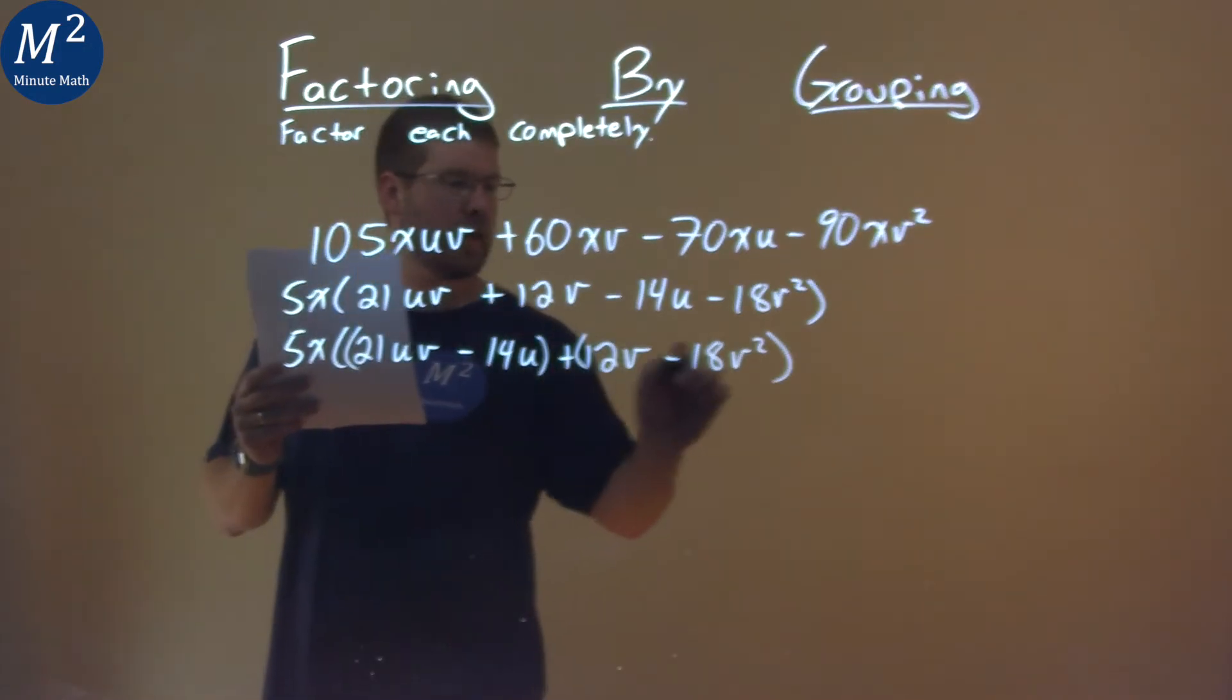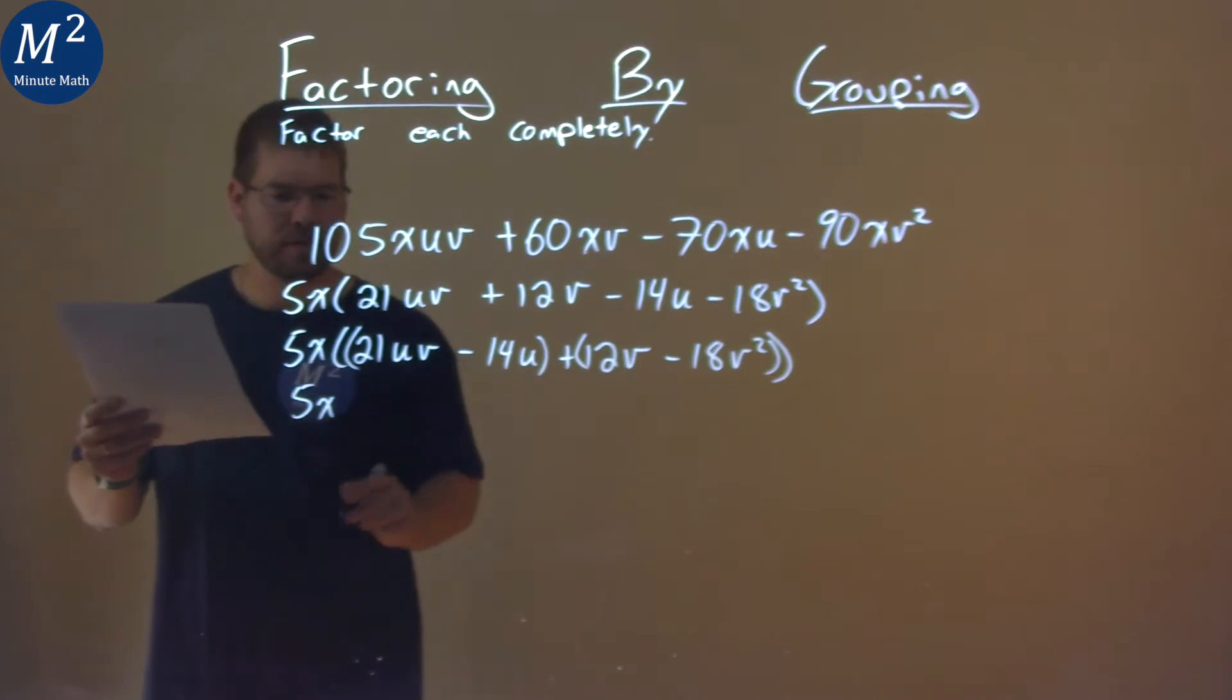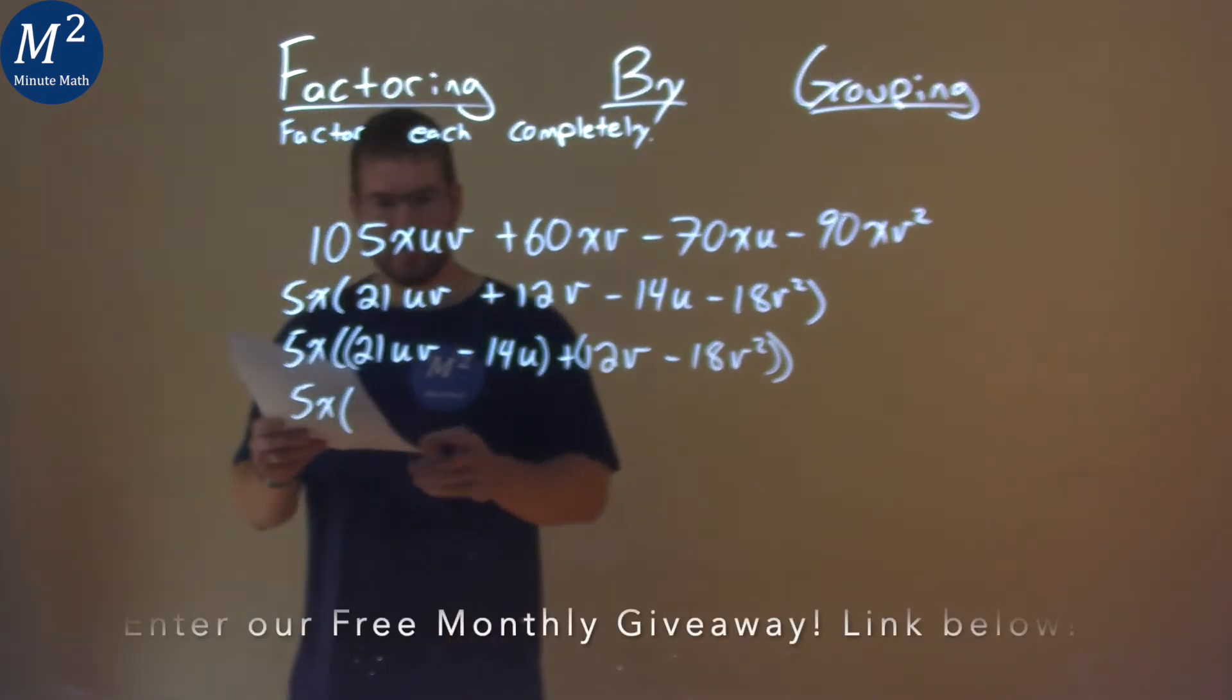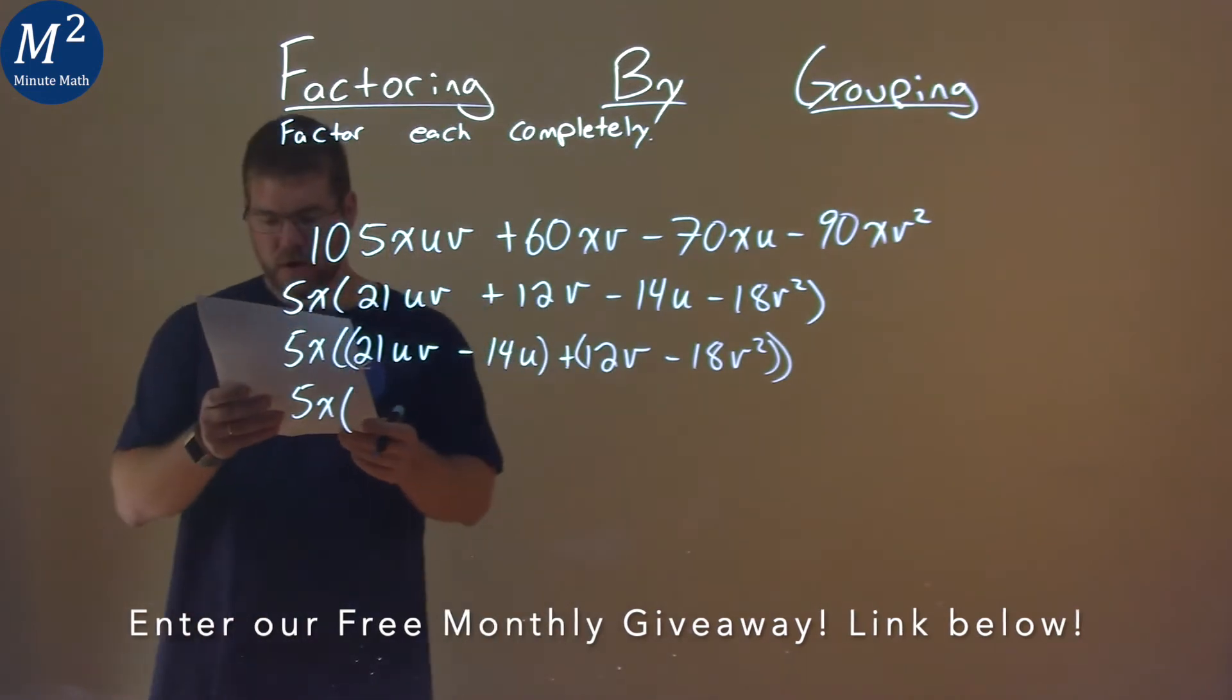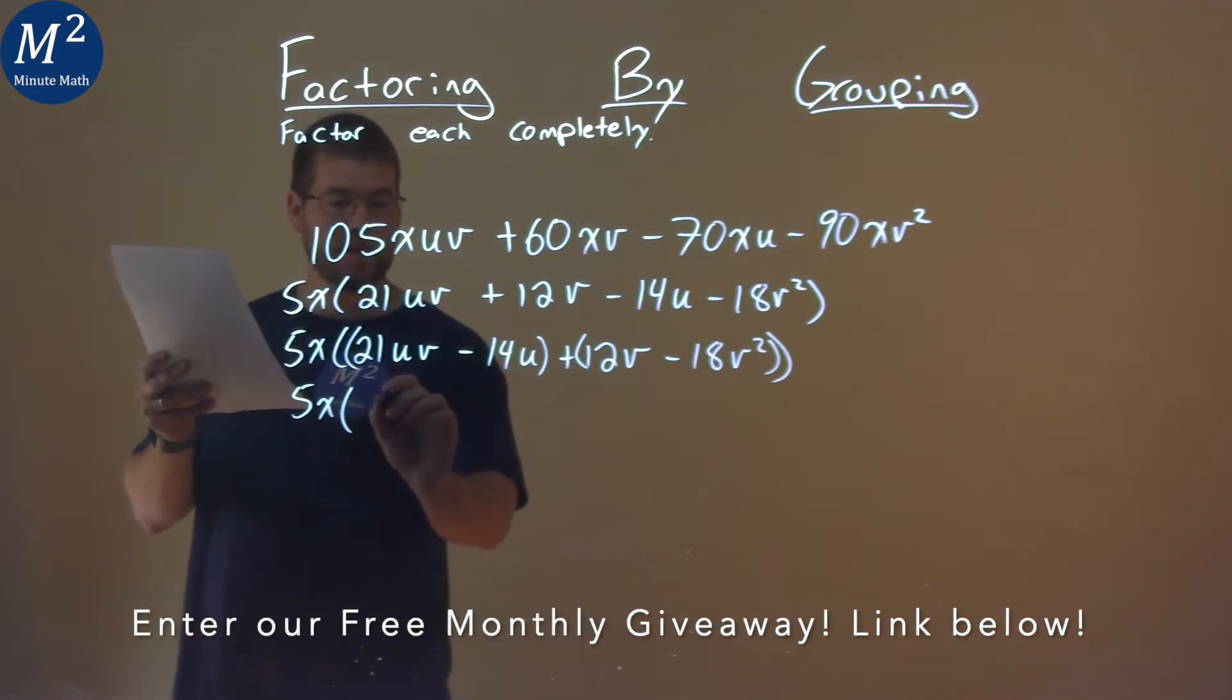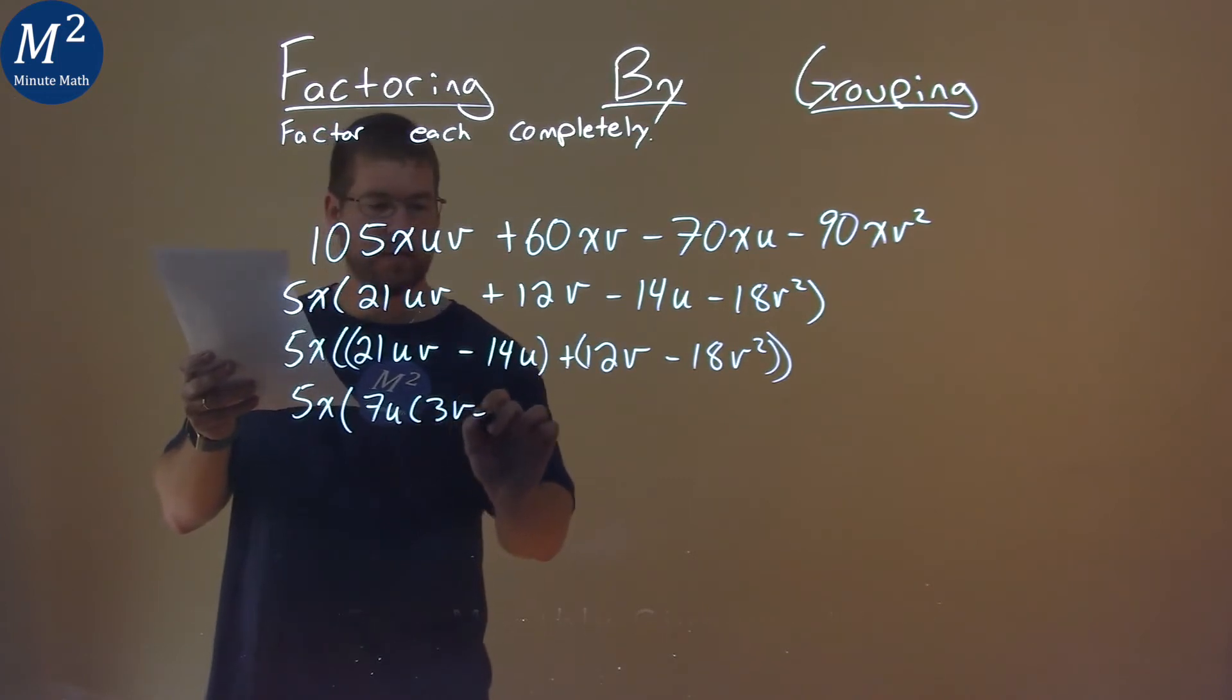I'm going to group the first two terms together and the second two terms. So what does that leave us? Well, 5X comes down, and what's a common term in 21UV and minus 14U? I pull out a 7U. 7U's in both of them, and I'm left with 3V minus 2 here.